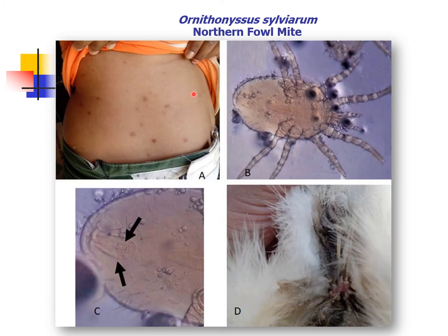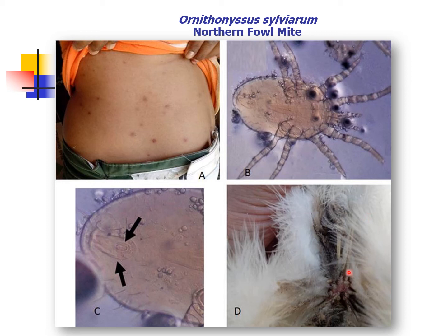We have here a figure showing the pruritic erythematous lesions caused by parasitism of O. sylviarum in the abdomen of workers. We also have O. sylviarum collected from a commercial laying hen house. At letter C, we have a focus on the anal plates of Ornithonyssus sylviarum, which are described as teardrop-shaped. At letter D, we have vent feathers of poultry parasitized by O. sylviarum with a higher infestation index.